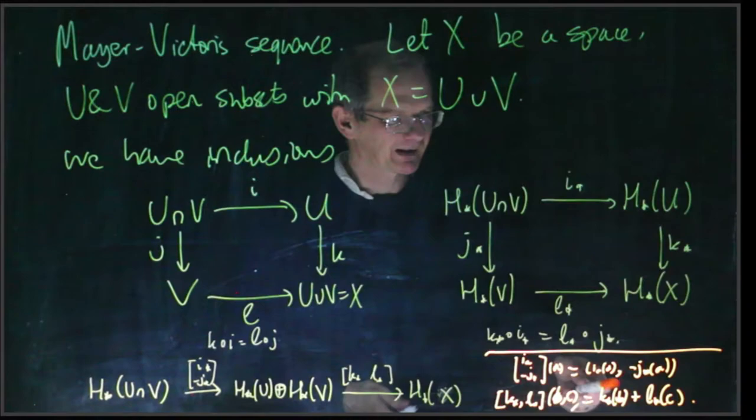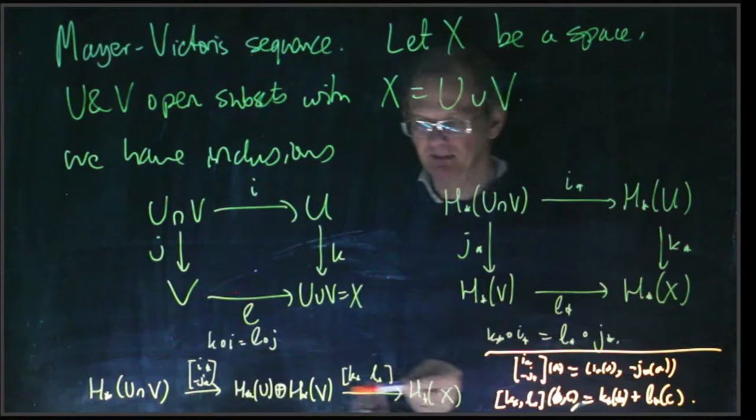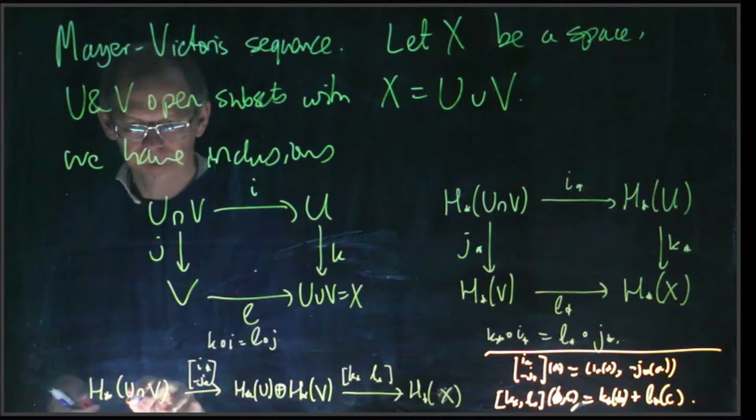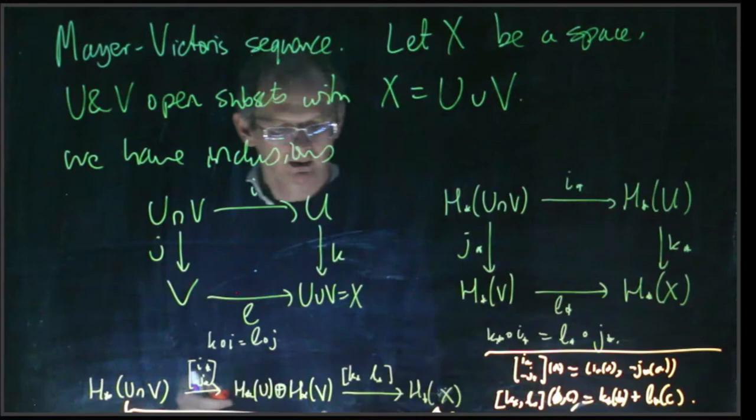If you think about it, if you do this map followed by that one, then you get k star i star a minus l star j star a, but k star i star and l star j star are the same. So the composite across here is zero. This composite is the zero homomorphism.